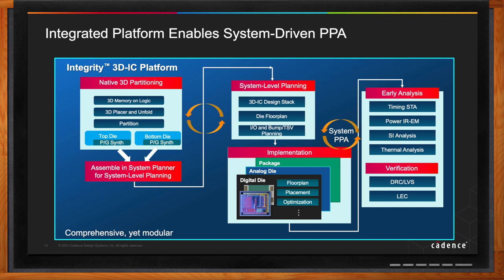Any decisions that we make while designing the system are based on the early feedback we get, so that the two or three chips in the 3D IC system stack have the best power, performance, and area with no wastage. That's the approach of the whole integrated platform — to come out with an efficient 3D IC system with the best PPA.